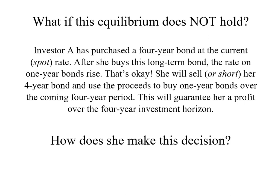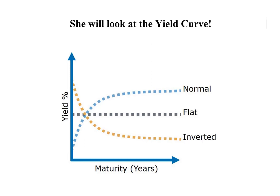The question becomes: how do you make that decision? Most investors in bonds will look at the yield curve. What the yield curve does is look at the yield on the bond versus the years of maturity. In what we call a normal or rising yield curve, as the maturity gets longer the yield will rise.